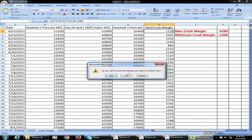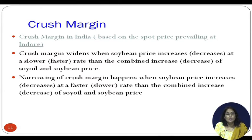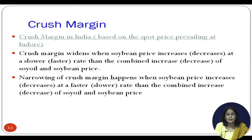The question is how the company can mitigate this risk. Widening of the cross margin happens when soybean prices increase at a lesser rate compared to the combined price increase of soya oil and soya meal. Narrowing of the cross margin happens when soybean prices increase faster than the combined increase of soya oil and soya meal. Also important to note: 1 kg of soybean yields approximately 18 grams of soya oil and 82 grams of soya meal.